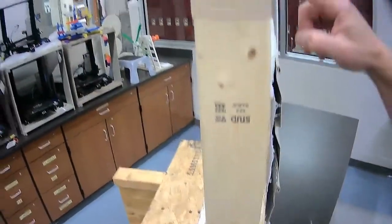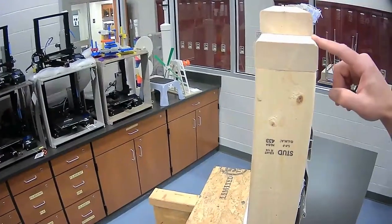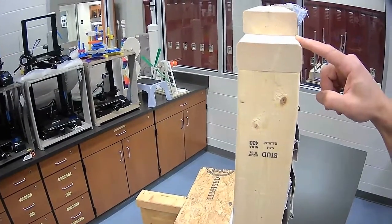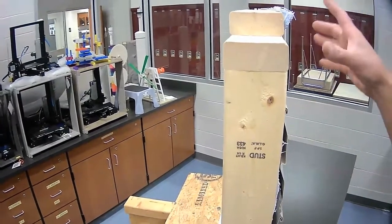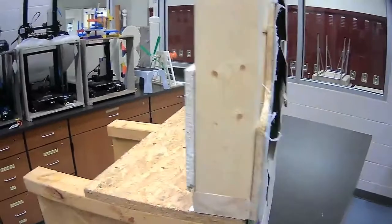At the top here we have a double top plate system. This double top plate system is what allows the load from any of the roof or floor systems above to be transferred down to the studs and then down through to the floor system.